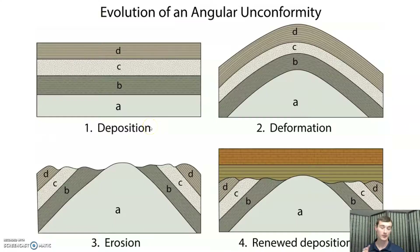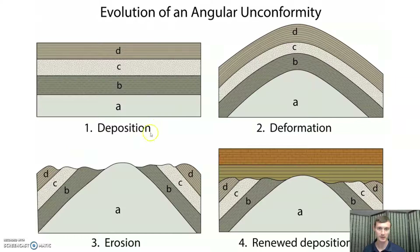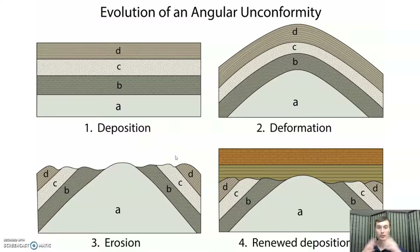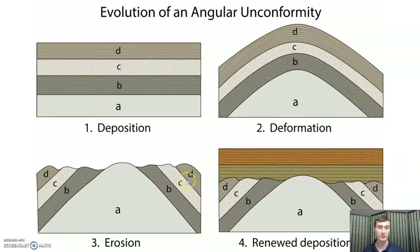The sequence for an angular unconformity looks like this: first, deposition of sedimentary rocks; next, deformation — some kind of tilting; next, erosion, stripping the top part away; and finally, more deposition of horizontal sedimentary rocks. Four steps.